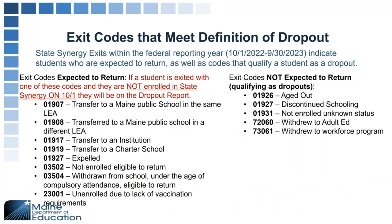Exit codes that do meet the definition of a dropout: if students are expected to return and do not have an enrollment on 10-1, they will be on the dropout report. Transfers to a public school, to an institution, or to a charter school are all expected to have an enrollment in State Synergy. If they do not have an enrollment on 10-1 at any school in the state, they are considered a dropout. Codes that automatically translate to a dropout include: aged out, discontinued schooling, not enrolled, unknown status, withdrew to adult ed, and withdrew to workforce programs.